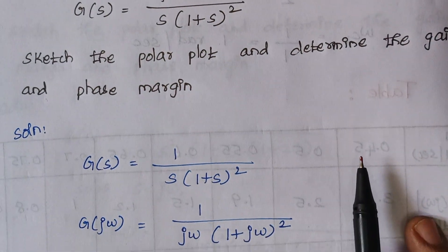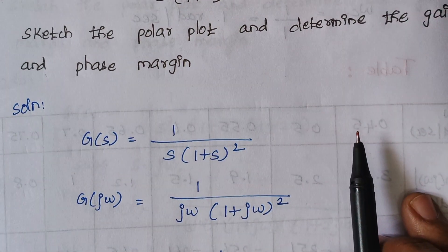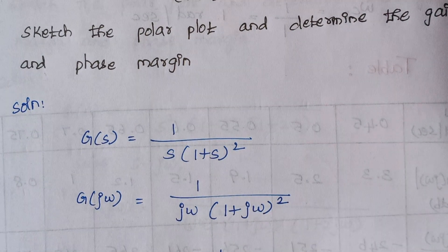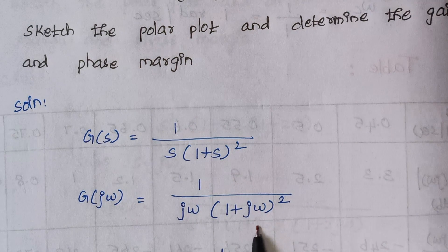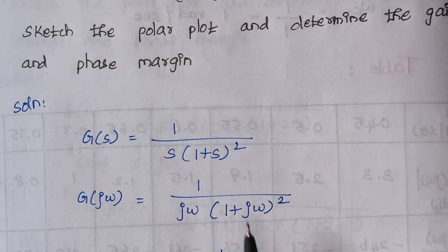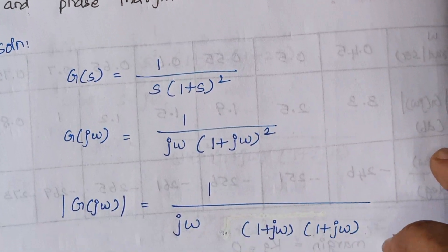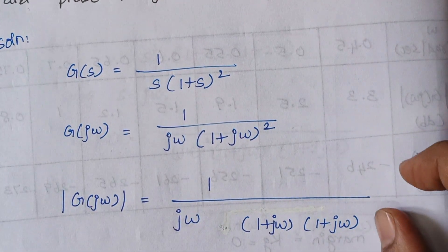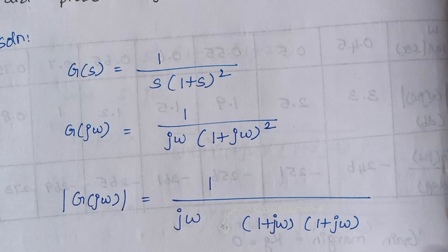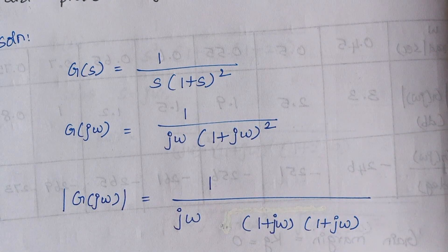The first step is we have to replace S by j omega. Now we are going to find the magnitude expression and phase angle expression.